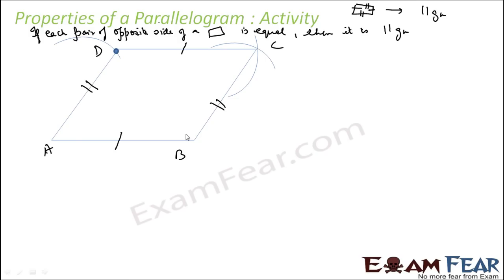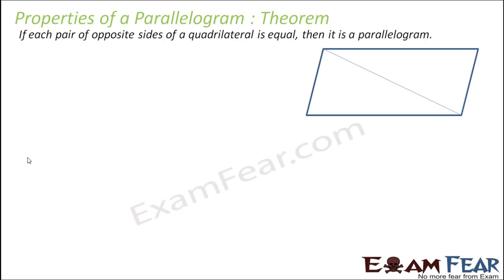This is an activity for you. Take a piece of paper, compass, and scale. Draw a length AB, take some length in the compass and draw two arcs with A and B as centers. Take any point D on one arc, measure AB in the compass and cut the other arc to find C. Join all four points and observe that AB is parallel to CD and BC is parallel to AD — thus it is a parallelogram.